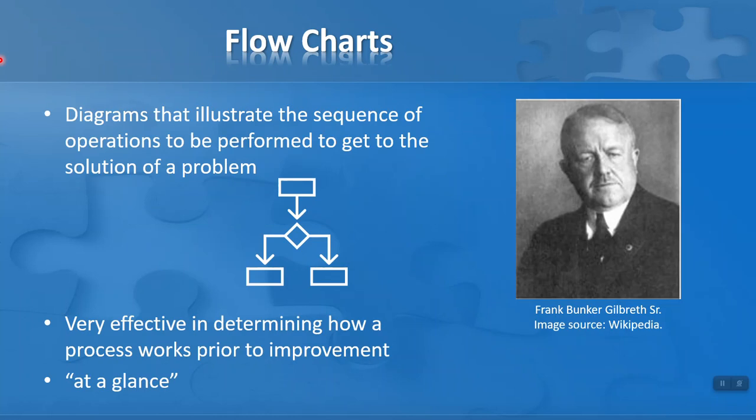So what is a flowchart? Flowcharts are diagrams that illustrate the sequence of operations to be performed to get to the solution of a problem. Therefore, they are good, useful tools for us as problem solvers to help us get to a solution. And a little bit of trivia for you. Flowcharts are, of course, used by this gentleman here on the right-hand side, Frank Bunker-Gilbreath. He was an American engineer and an author known as a pioneer of time and motion study. But the little bit of trivia is he's probably perhaps better known as the father and central figure of the cheaper-by-the-dozen book and movie that you may be familiar with. Flowcharts are very effective in determining how a process works prior to improvement. So we've got a problem. We want something that's not working to its capacity or at its best or there are errors occurring. How do we improve it? And the flowchart is a great tool for giving us what I call an at-a-glance approach to a problem.